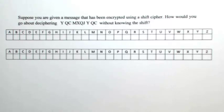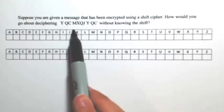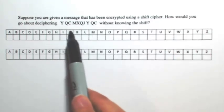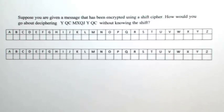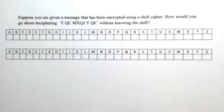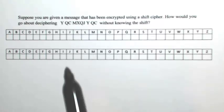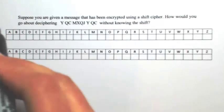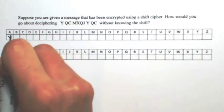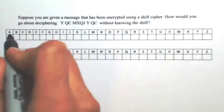Looking at this message, I noticed that two of the words are a single letter. So these Y's are either I's or A's. I don't know which one, so let me try A first. Let's say that the Y came from A, so everything would be shifted accordingly.